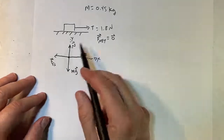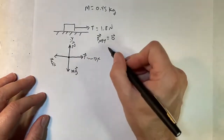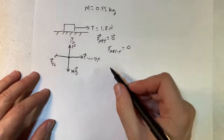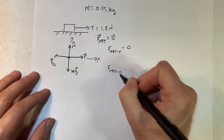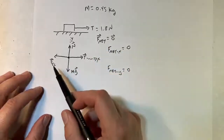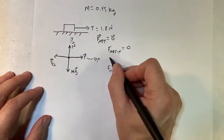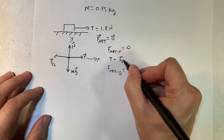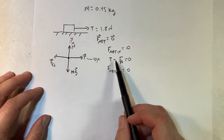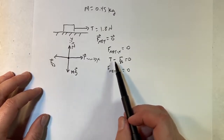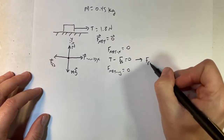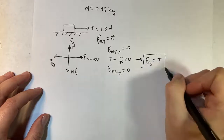Now I can write this as two equations: F_net_x equals zero for the forces in the x direction, and F_net_y equals zero. In the x direction I have the tension minus the friction force. Since this is a scalar equation, I need to indicate positive or negative direction. So I can say the static friction force equals the tension force.